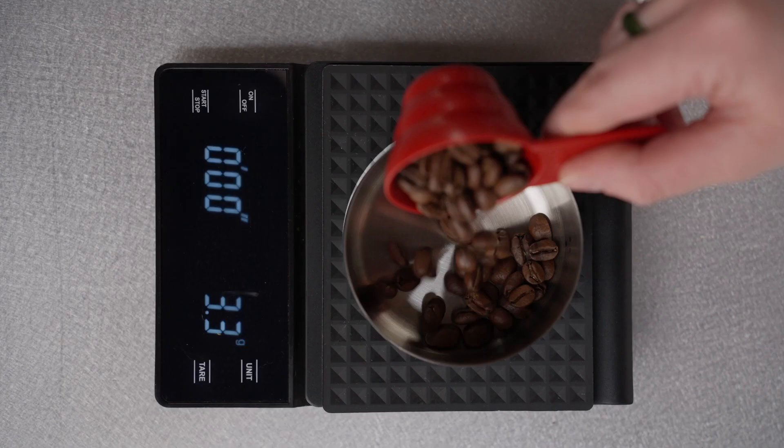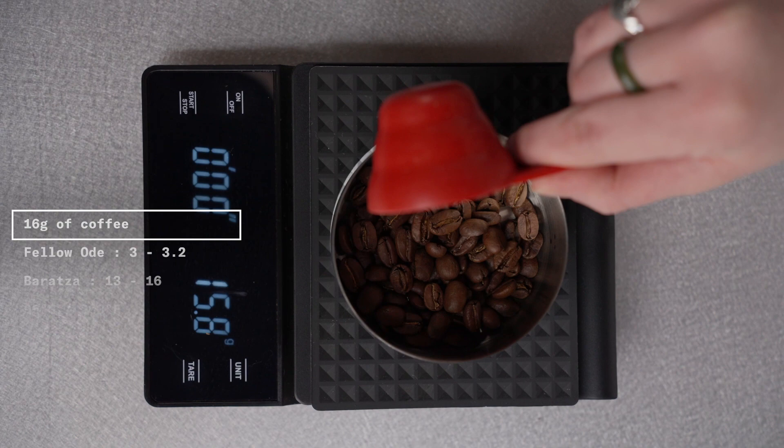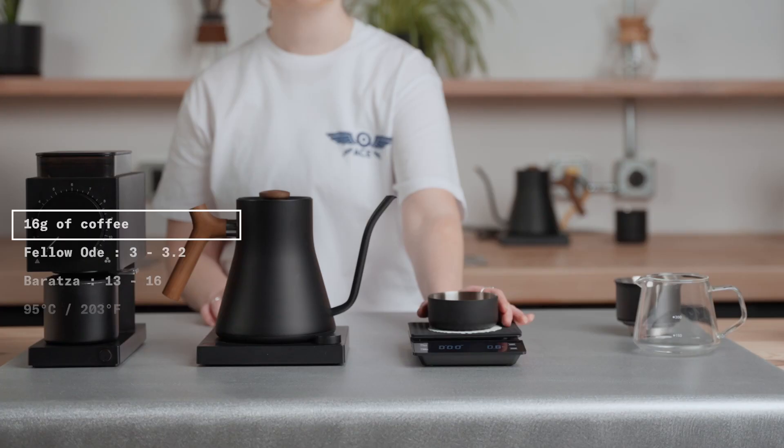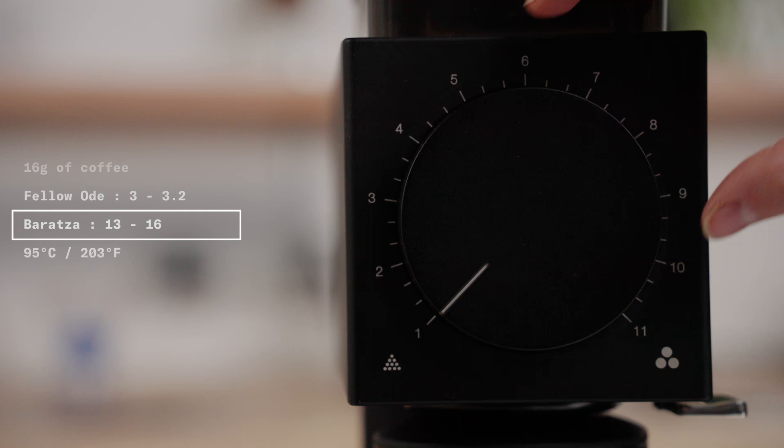Weigh out 16 grams of coffee. Our recommended grind settings are 3 to 3.2 on the Fellow Ode and 13 to 16 on Baratza products. If you have a different grinder you can find the manufacturer's recommended grind settings on our blog.